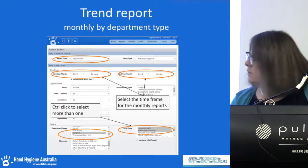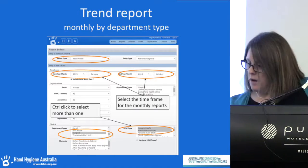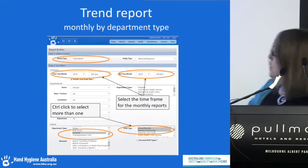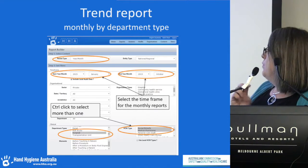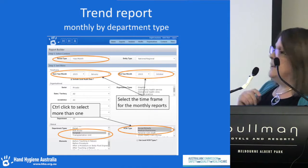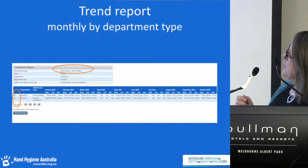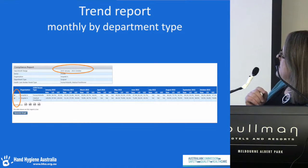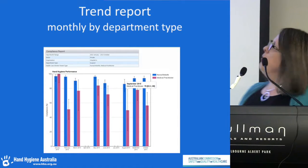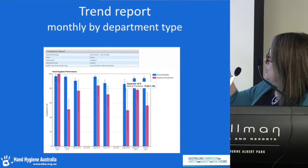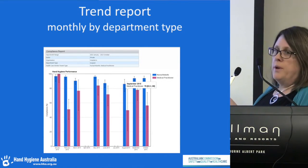With the monthly trend report, data is available in the table for download, and you can generate a graph showing the two healthcare worker types — medical practitioners and nurses — with their compliance over the range of monthly periods selected.